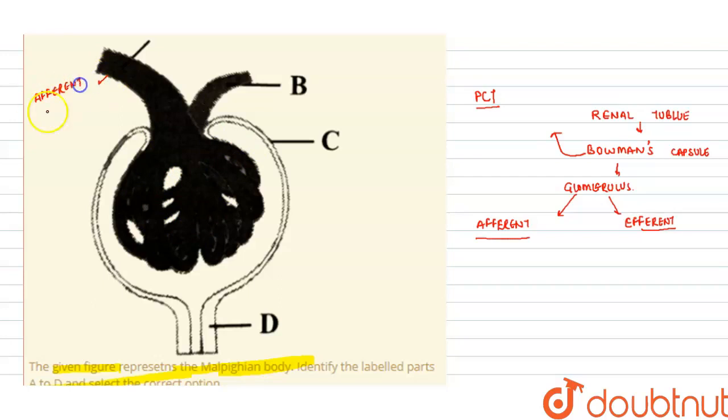And the efferent arteriole. Now how will you differentiate or recognize the efferent and afferent? Usually the afferent arteriole is thicker in diameter whereas efferent arteriole is a little bit less thicker in diameter.